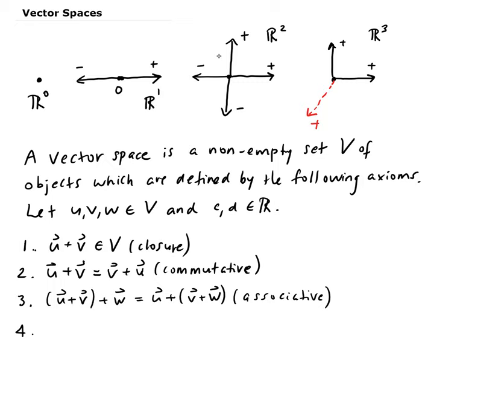Fourth, there exists a zero vector. There exists a zero vector that has to belong in the vector space, such that when you take that zero vector and you add it to any vector in V, you're going to get back the same vector.